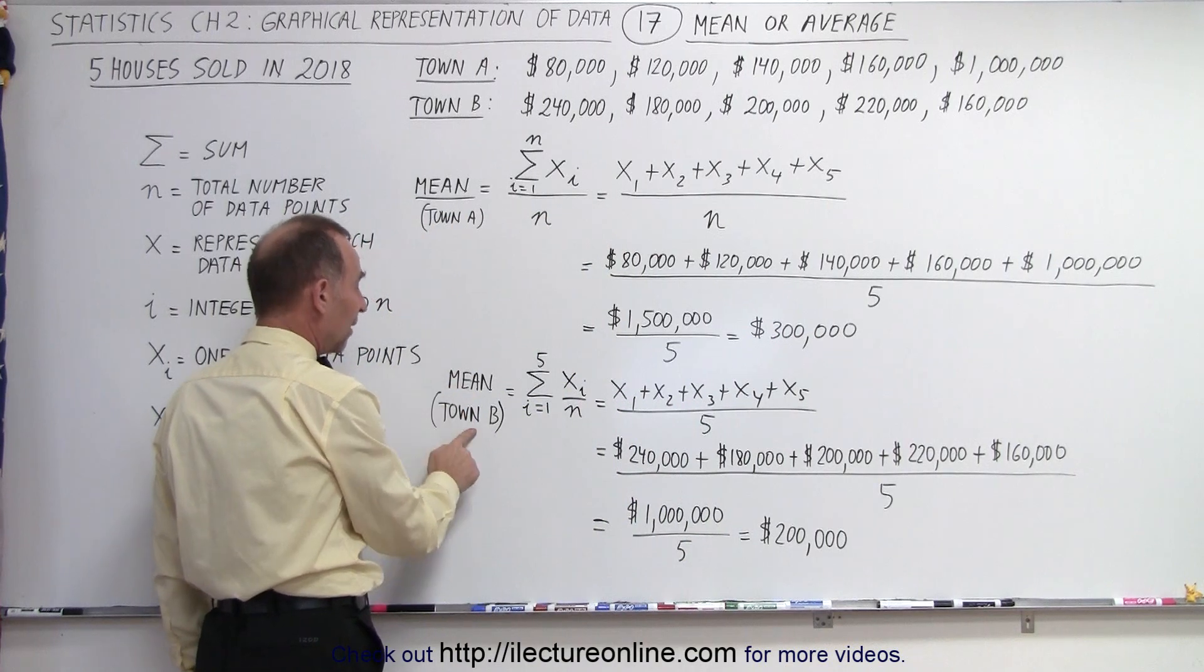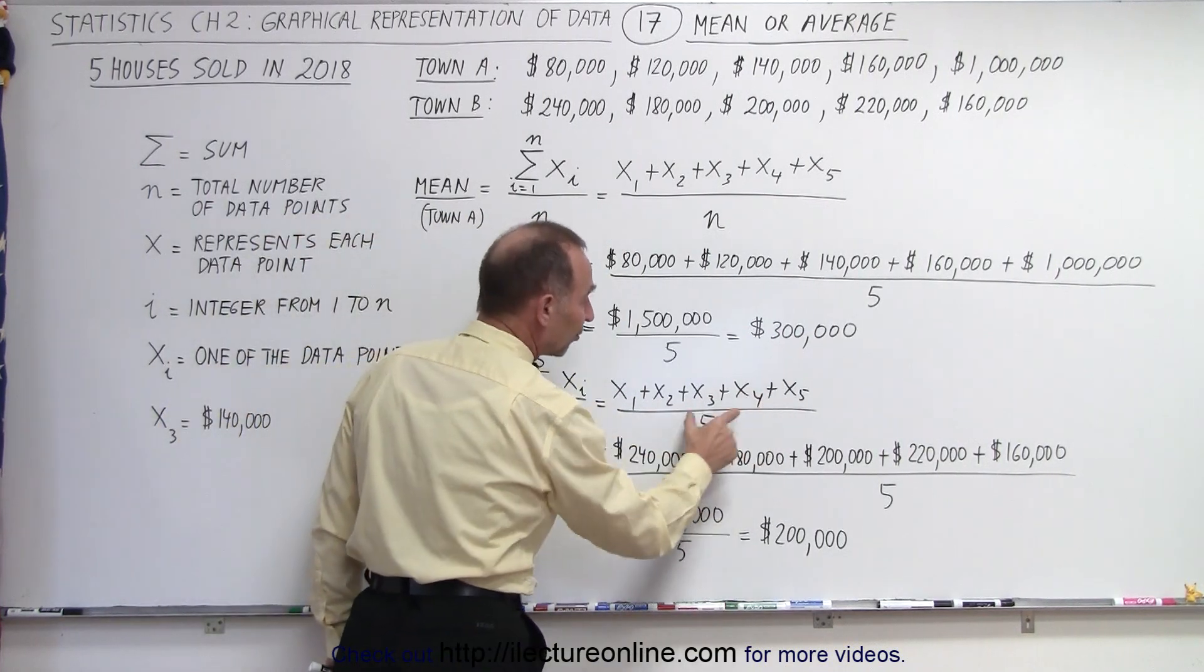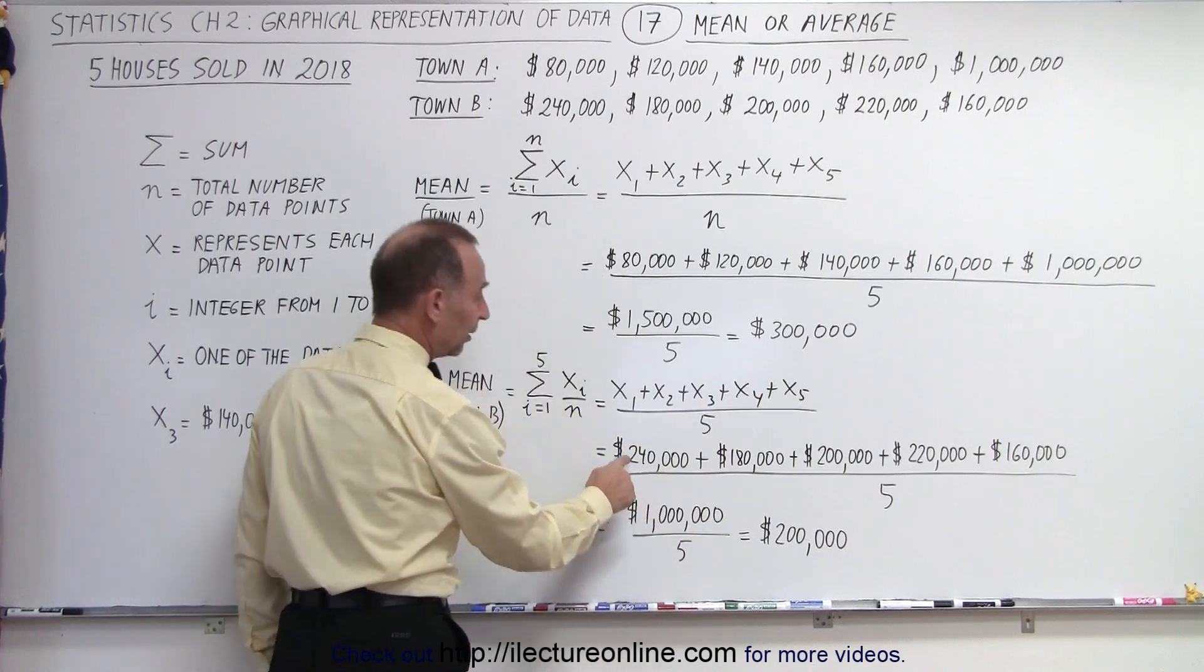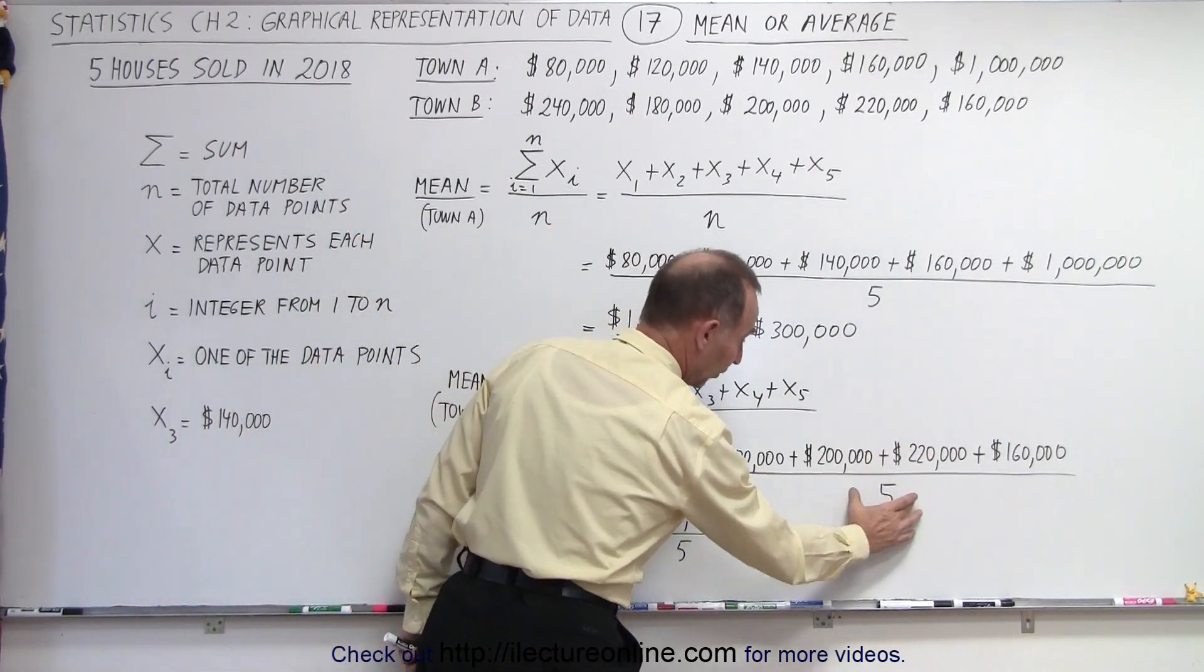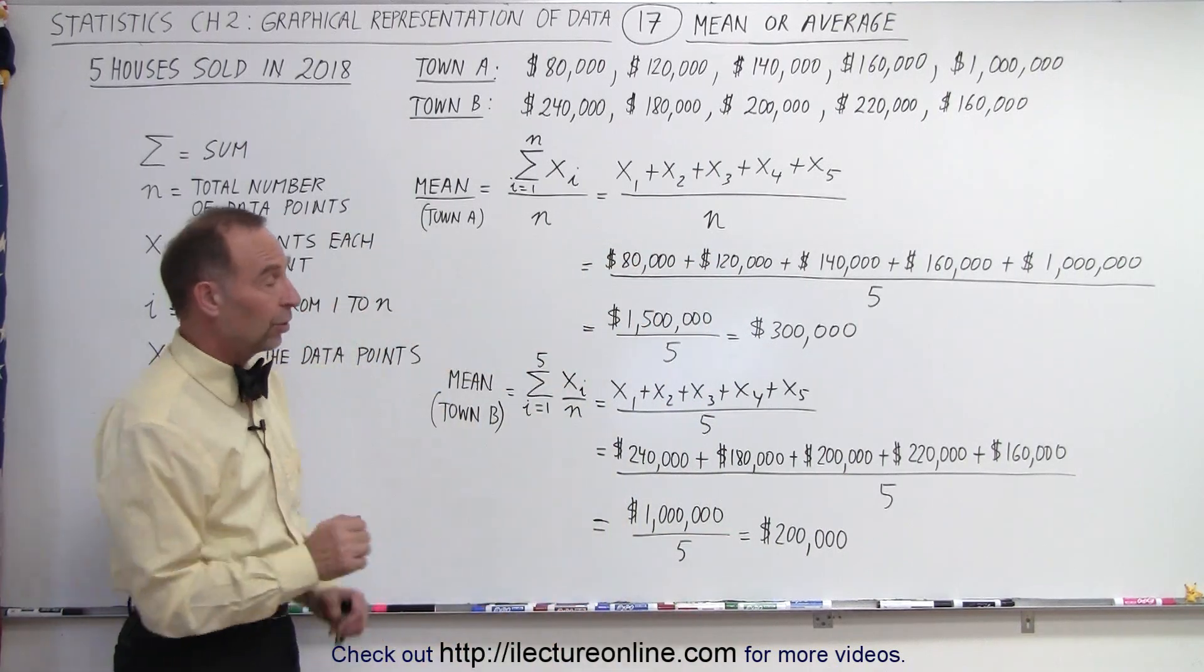We do the same calculation for town B. We find the mean or the average by summing up all the values divided by the total number of values. Here's the house prices. There's five houses sold, and here we can see that the average price is $200,000.